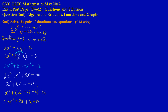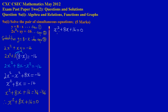Now I'll solve x² + 8x + 16 = 0 using the AC method. Here, a = 1 (coefficient of x²) and c = 16, so AC = 1 × 16 = 16. I need two factors of 16 that add up to positive 8.